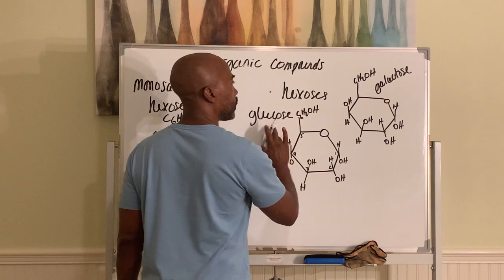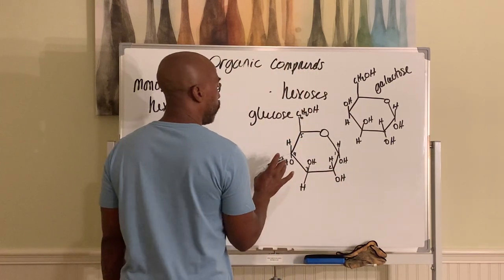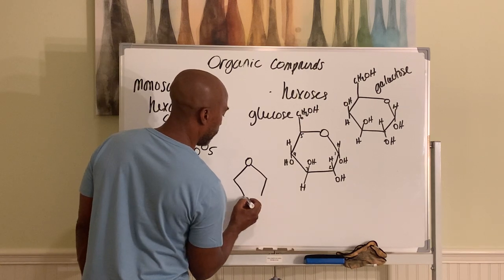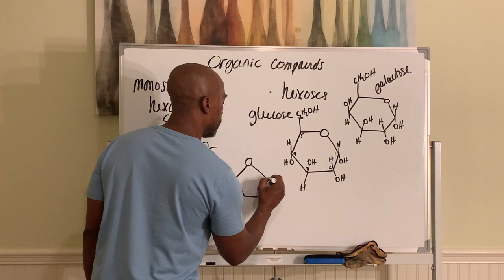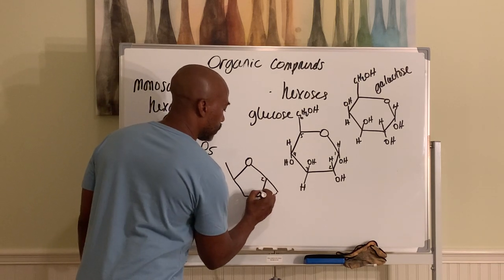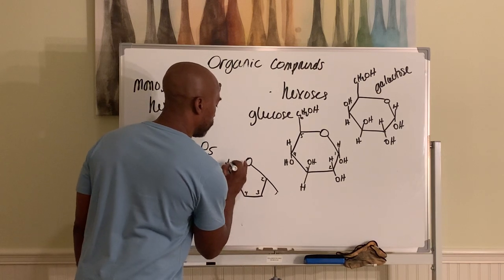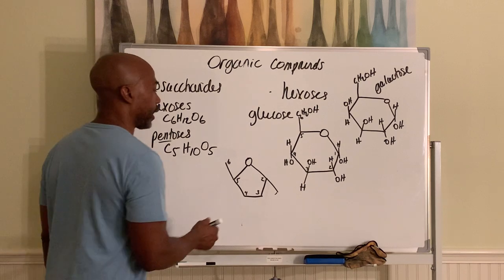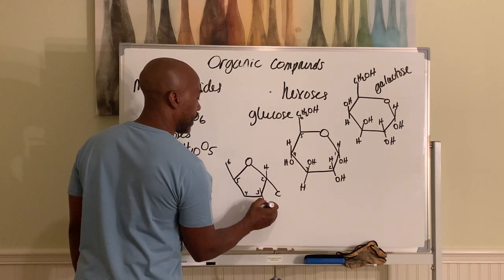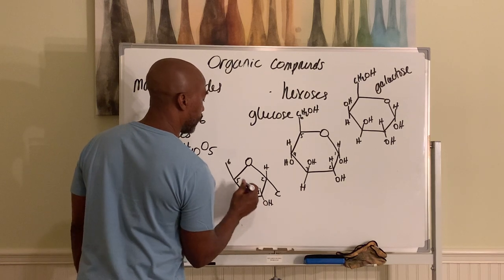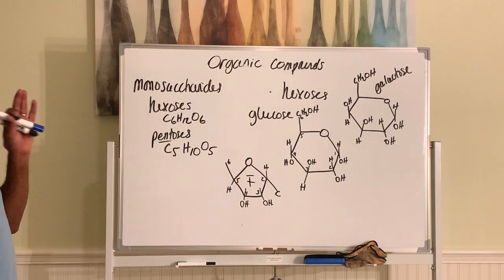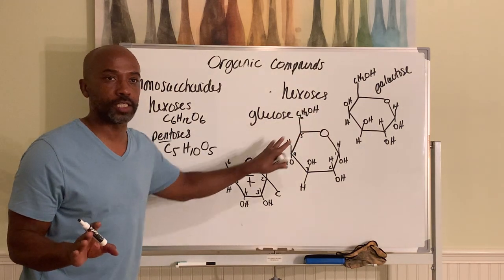Fructose is the third common hexose. It has only four carbons in the ring — it's shifted over compared to glucose and galactose. You still have six carbons total, with one carbon on each side of the ring. The OH orientations go down, down. That's fructose. All three — glucose, galactose, and fructose — have the same formula C₆H₁₂O₆, making them structural isomers of each other.